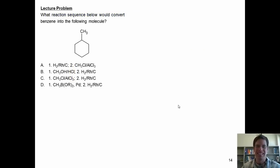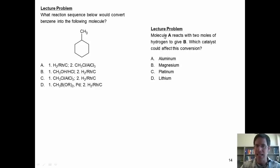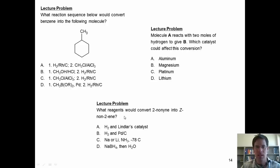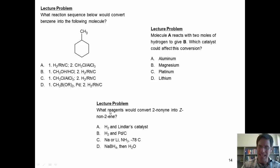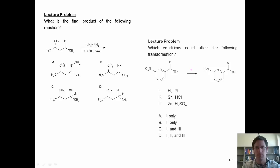Here are some lecture problems. First, what reaction sequence would convert benzene into the following molecule? Next, molecule A reacts with two moles of hydrogen to give molecule B—any time you see two moles of hydrogen consumed, that tells you molecule A is an alkyne—which catalyst could affect this conversion? Next, what reagents would convert 2-nonyne into 2-nonene? What is the final product of the following reaction sequence? And what conditions could affect the following transformation?